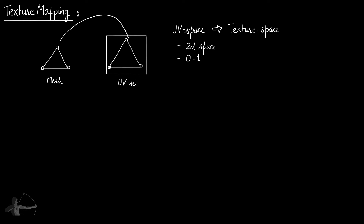The process of assigning a coordinate to each vertex of the mesh in UV space is called UV mapping. There are two basic rules of UV mapping. One: every coordinate assigned to the vertex should be in the range of 0 to 1.